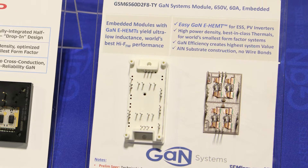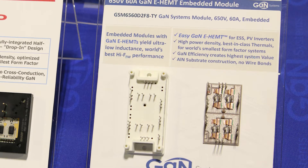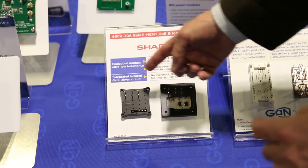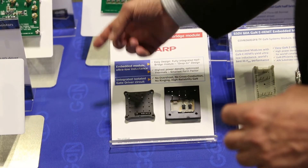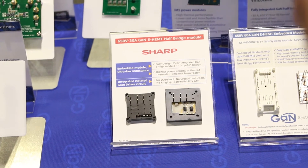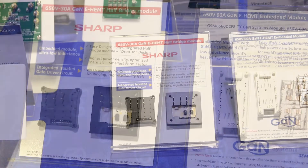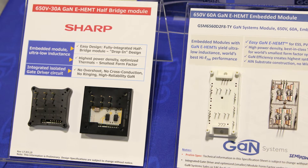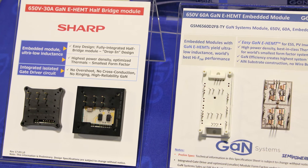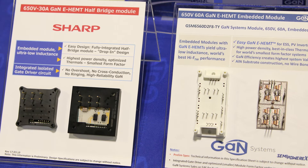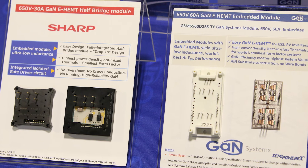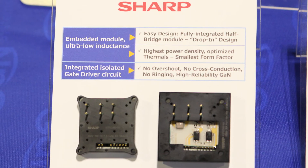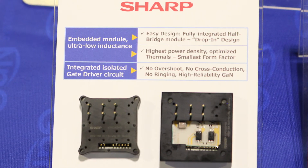There are a couple of examples right here. This one's by a Korean company, Semi PowerX. This one is by a Japanese company, Sharp. What they've done is they've paid attention to inductance and they've paid attention to heat transfer. They've made modules that have much lower inductance, which keeps the voltage overshoots down so you can get more current through the devices. They've also paid attention to heat transfer by using really good substrates to suck the heat out of the devices and keep the temperatures low. By doing that, they can get the maximum performance out of the GaN transistors.